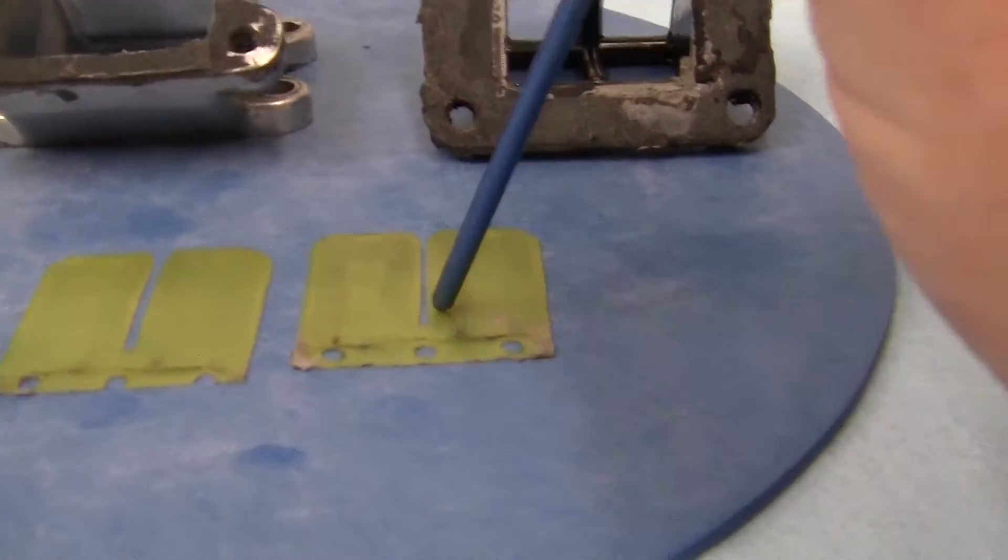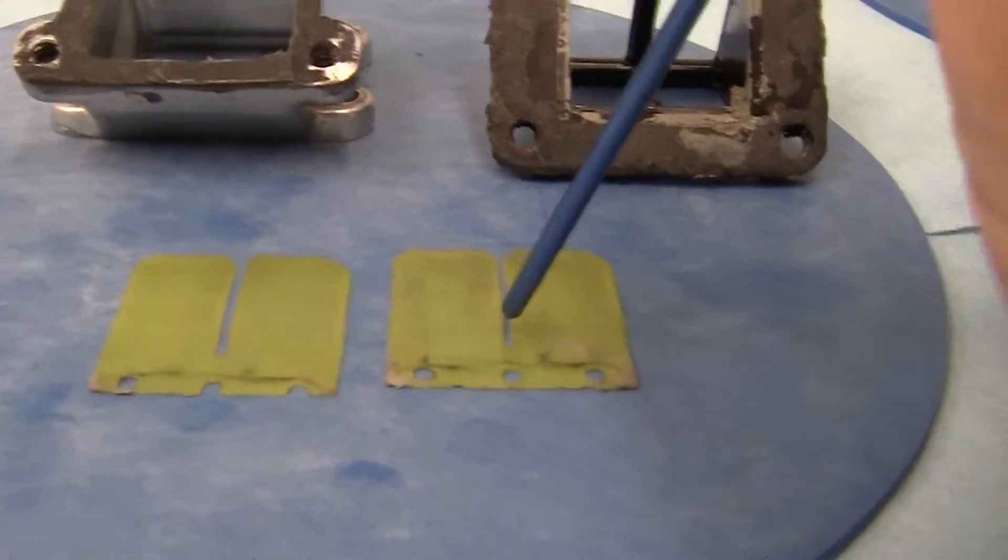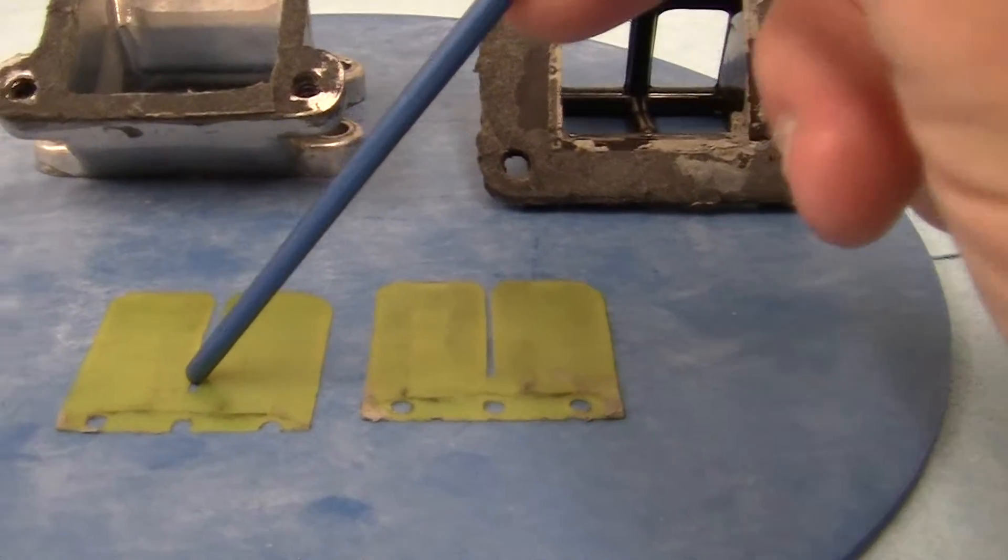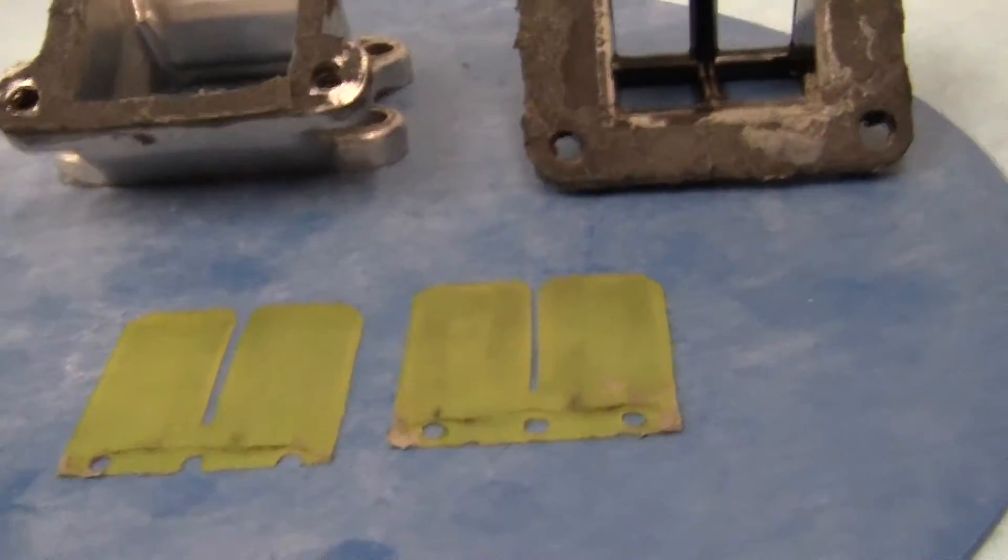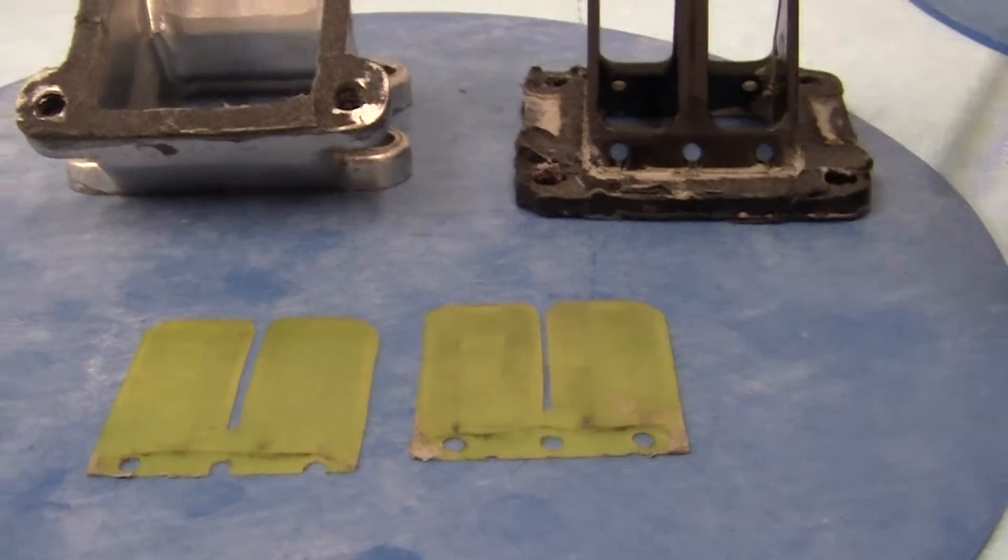These are what's called Boyson reeds. These were reed material in the shape of the cage that I have.